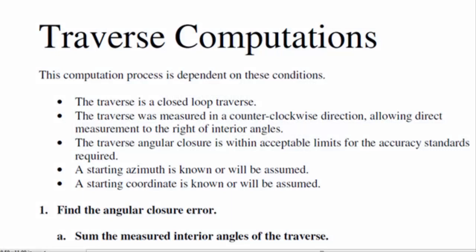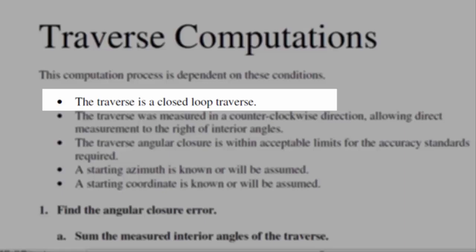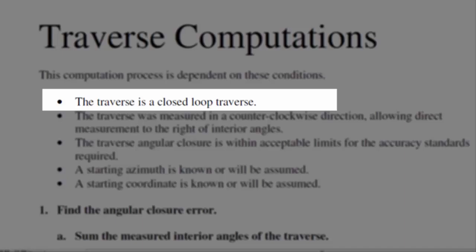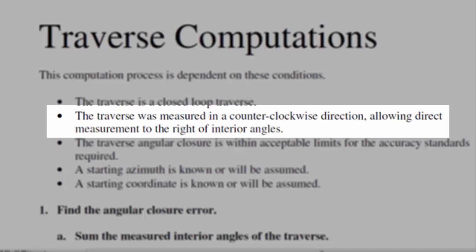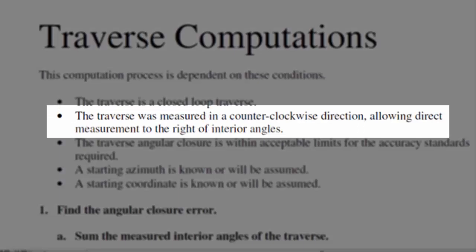Our discussion today is going to focus on loop traverses. The traverse we're looking at for these computations is considered a closed loop — it starts and ends in the same place. Generally in the field, it's best if we measure these in a counterclockwise direction, which allows us to measure interior angles directly.